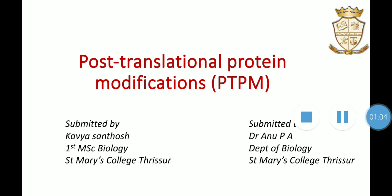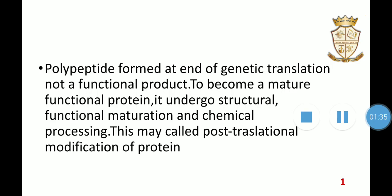Here is post-translational modification. After translation, the protein molecule that forms is not fully functional. It would need many changes, that is, modifications. This is known as post-translational protein modifications. To become a mature functional protein, it has to undergo many structural modifications, functional maturations, and chemical processing. This process is essential in the formation of a complete protein.